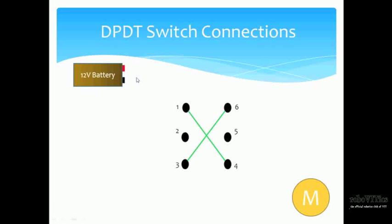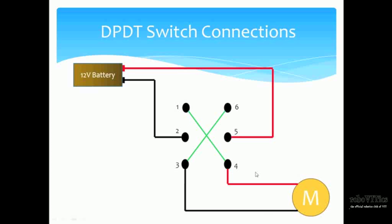Next, take a power source and connect it across pins 2 and 5. Then take the motor and connect it across pins 3 and 4.